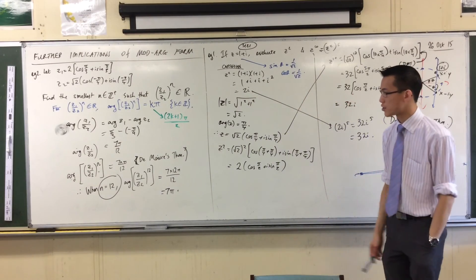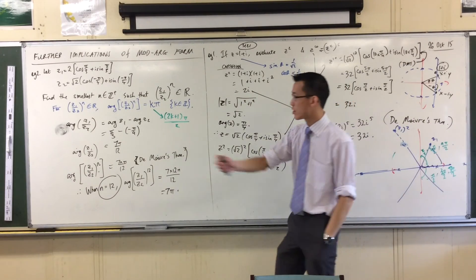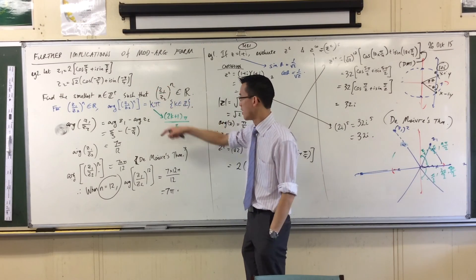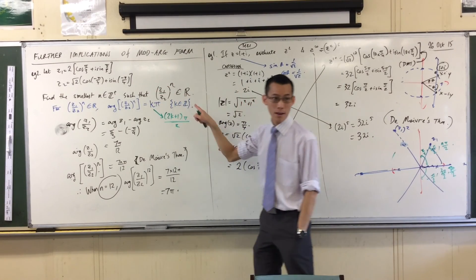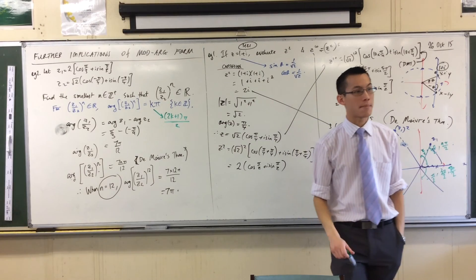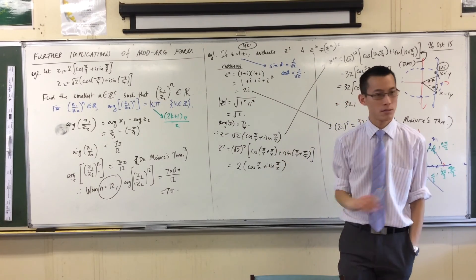In fact, you can go ahead, you can try this question. Find the smallest positive integer, such that you don't get a wholly real number, but you get a wholly, a purely imaginary number. It's a bit trickier. It's not impossible.